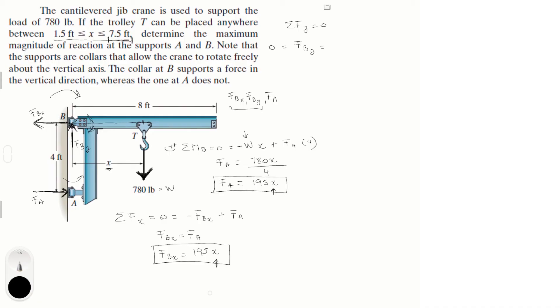minus the weight. So you know that F of B of y is equal to the weight. So F of B of y would always be equal to 780 pounds.